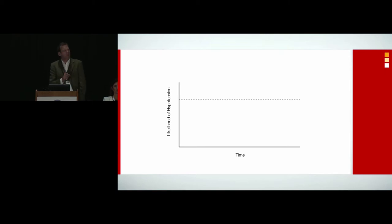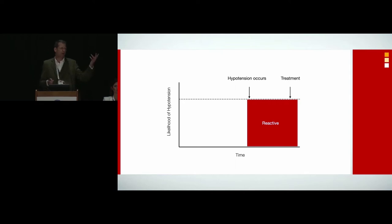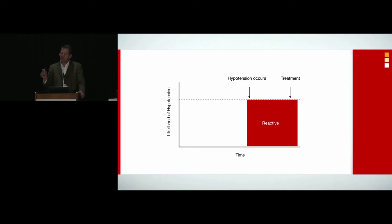A fundamental problem for me about hypotension is that we treat it after we allow it to happen. We live in this very reactive state of medicine. Hypotension occurs, we get the vasopressor drug, give an injection, and we treat it. But in the interim, it's happened. And the association of hypotension and harm is the cumulative amount of hypotension — repeated small episodes over time lead to thresholds that cause poor patient outcomes.